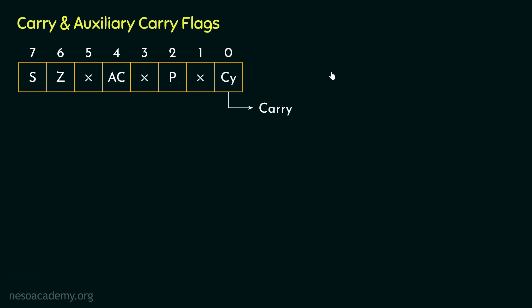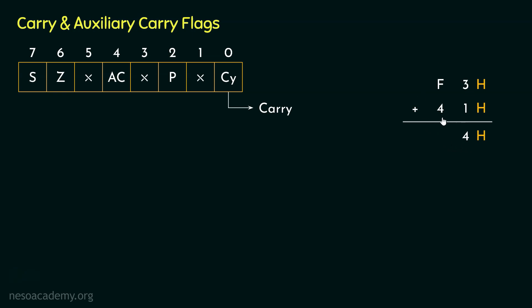The carry flag is affected when we perform some kind of addition. To simulate that, let's perform another hexadecimal addition today. So, 3 plus 1 gives us 4. Coming to the most significant digits, we are adding F with 4. So in the result, we are going to have 3, accompanied by a carry of 1. Now, our accumulator is 8 bits, so when we store the result, 34 will get stored inside the accumulator. However, in this particular addition, a carry has been generated.